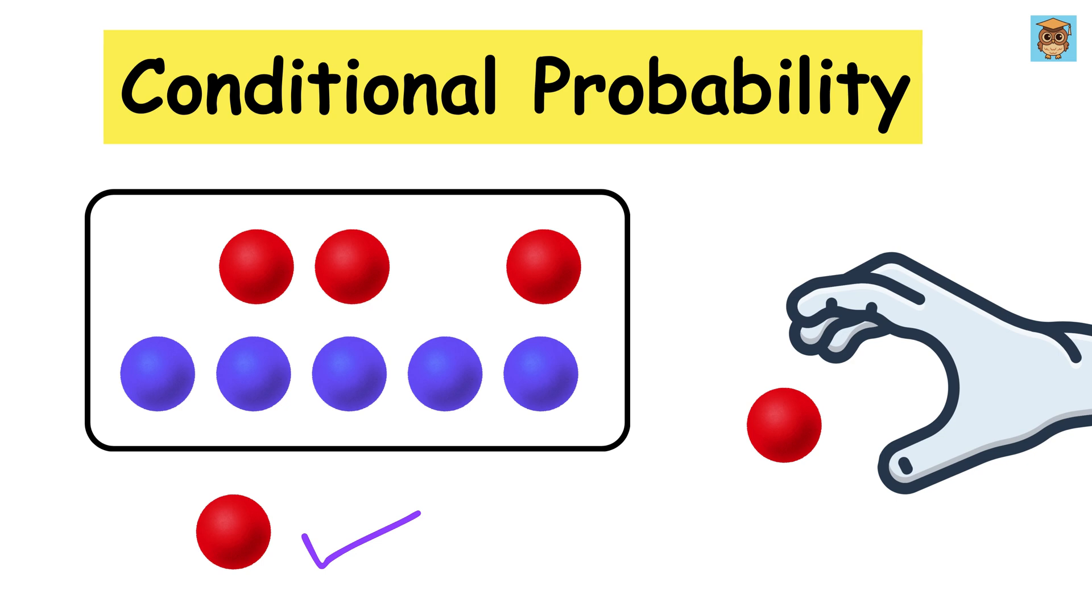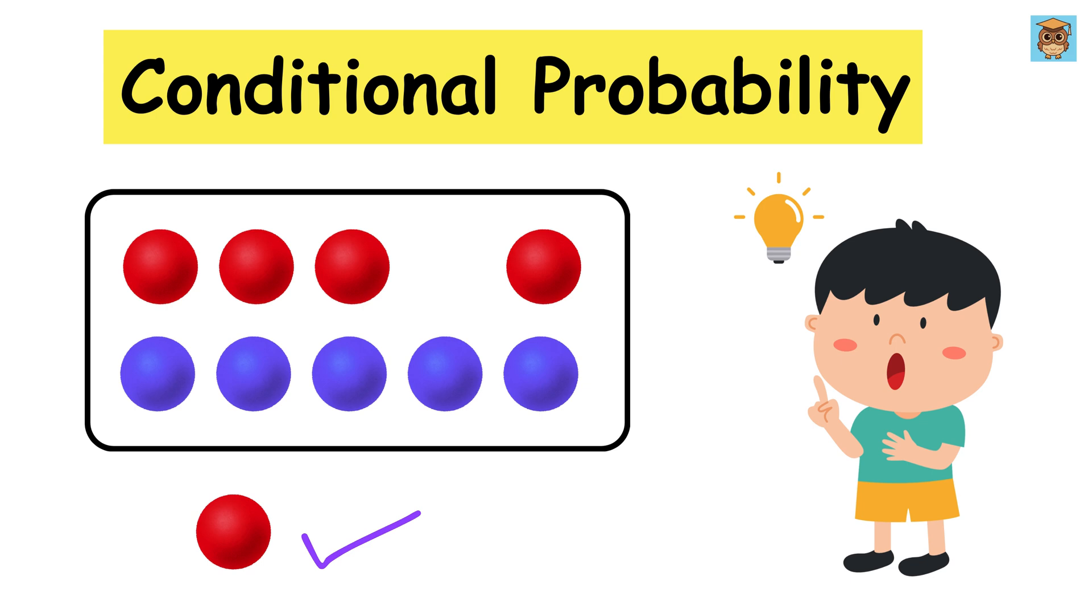So in short, conditional probability is just regular probability, but you already know something and you use that knowledge to update your chances.